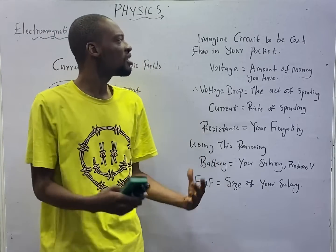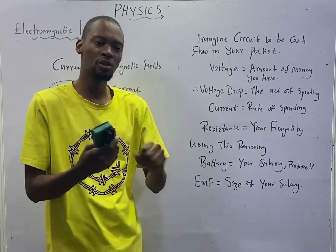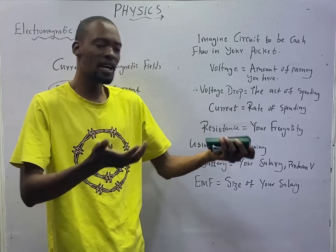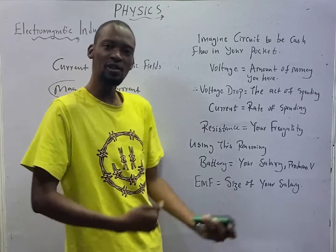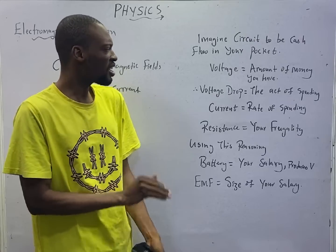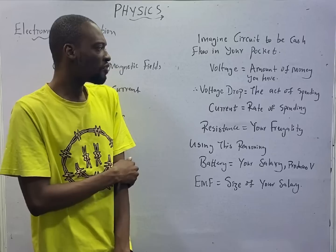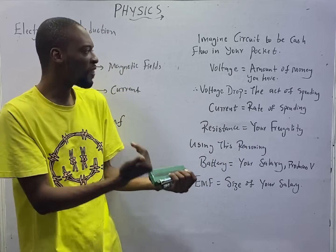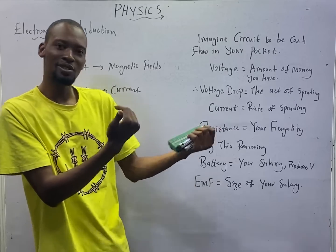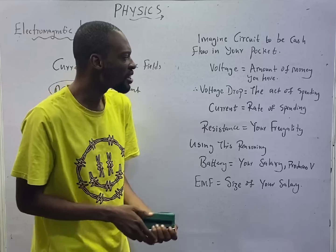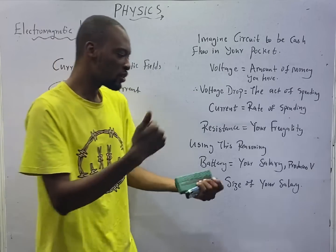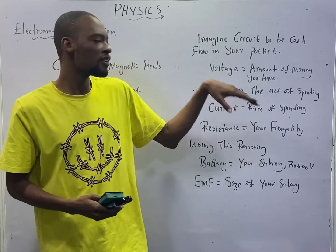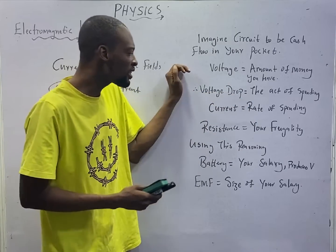Let me explain the concepts of current, voltage, resistance, and EMF. Imagine an electric circuit is the total money you have in your pocket — your cash flow. That is the circuit. Let voltage be the amount of money that you have — the more money you have, the more voltage you have. Voltage drop is the act of spending; as you spend, the money you have is dropping. Current will be the rate of spending. The way you spend is the current. The amount of money you have is what actually pushes how you spend — it is voltage that pushes current.